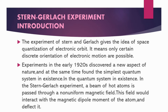Introduction of the Stern-Gerlach Experiment. The Stern-Gerlach experiment gives the idea of space quantization of electronic orbit. It means only certain discrete orientations or orbital motions are possible. This experiment, performed in the early 1920s by German physicists Otto Stern and Walter Gerlach, leads to the discovery of quantum spin in an electron and also gives the idea of space quantization of electronic orbit.